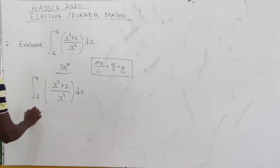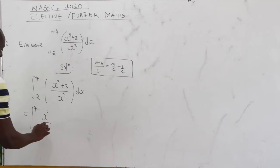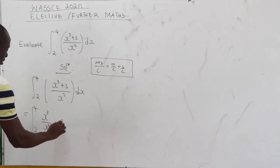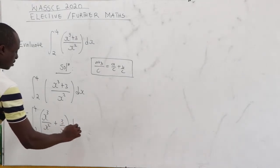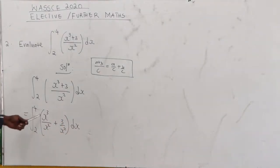And this is equal to our integral from 2 to 4, and this is the same as x to the power 3 all over x square plus 3 all over x square dx.